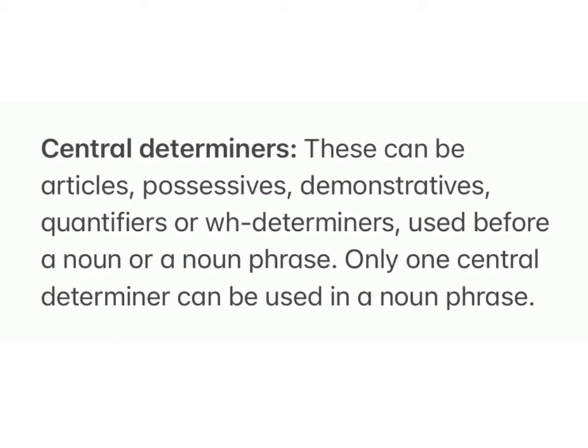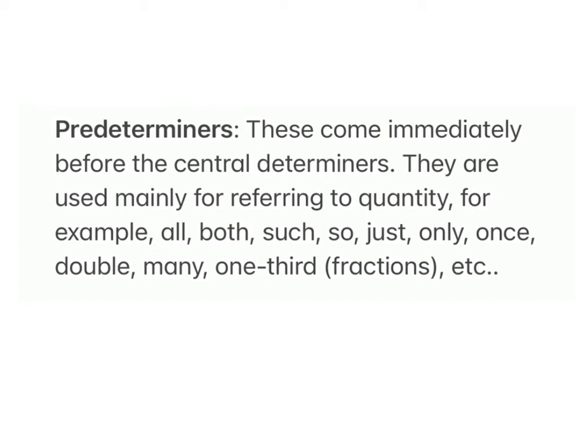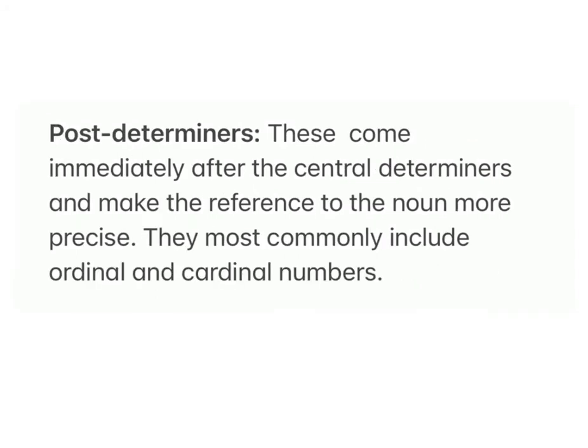Predeterminers come immediately before the central determiners and are used mainly for referring to quantity. Examples include: all, both, such, so, just, only, once, double, many, one-third, fractions, etc. Post-determiners come immediately after the central determiners and make the reference to the noun more precise; they most commonly include ordinal and cardinal numbers.